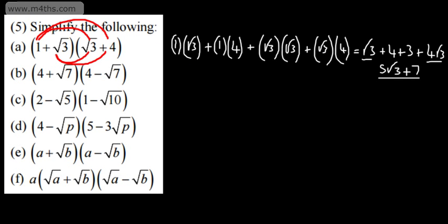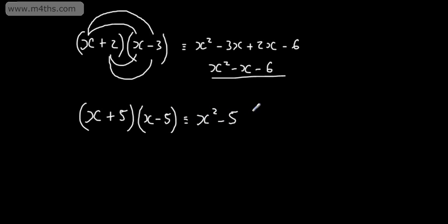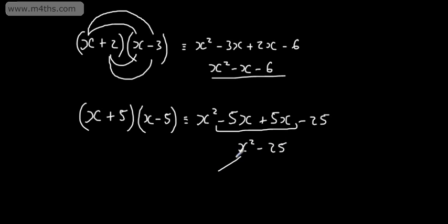This next example gives rise to something quite interesting — the difference of two squares. If we have x plus 5 multiplied by x minus 5, expanding gives x squared minus 5x plus 5x minus 25. The two middle terms drop out, the expression is independent of terms in x, and we have x squared minus 25. Both are square numbers with a minus between them — we call this the difference of squares. We'll use this when rationalizing the denominator by multiplying by the conjugate — the same values with the sign changed.